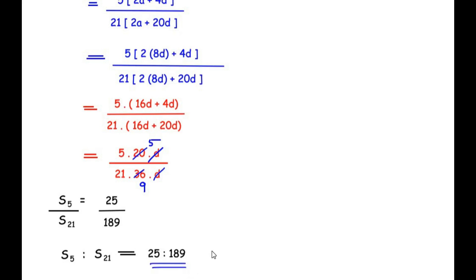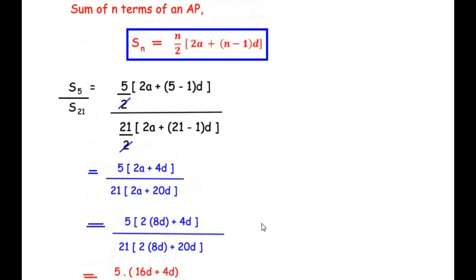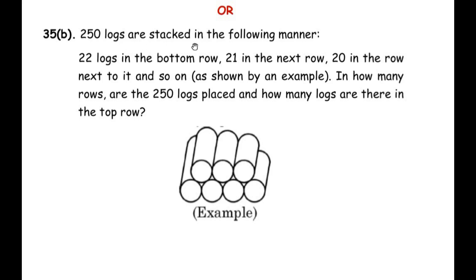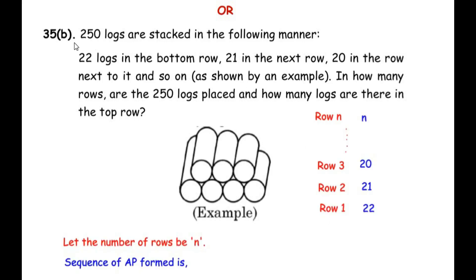Now let us move to the 'or' question: 250 logs are stacked with 22 logs in the bottom row, 21 in the next, 20 in the row above that, and so on. We need to find in how many rows the 250 logs are placed and how many logs are in the top row. The bottom row (row 1) has 22 logs, row 2 has 21, and each row decreases by one.